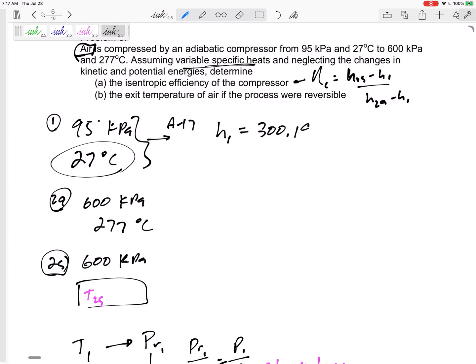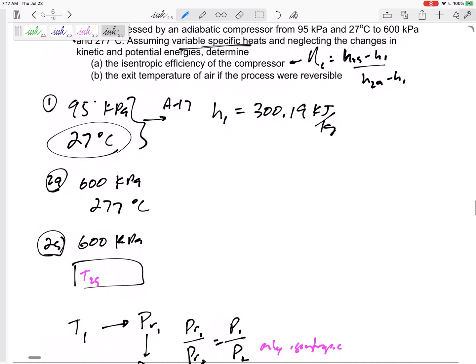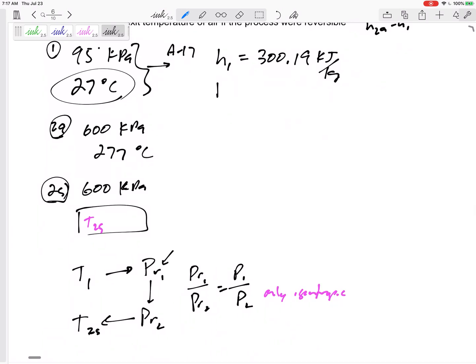This would be 300.19 kilojoules per kilogram. And also, while I'm at it, this PR1 would be 1.386 unitless. This right there, table A17. H2 actual, 554.74.